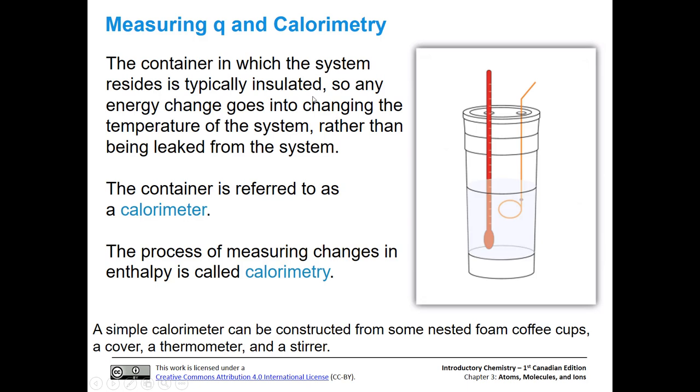When we want to measure the heat, we actually want some sort of system where we're not losing heat to the outside environment. So we're going to pick something that's insulated so that the energy change goes into changing the temperature of the system rather than being leaked from the system and just diffusing out in the outside environment. That container is called a calorimeter. And when we measure these changes in enthalpy or energy, it's called calorimetry.